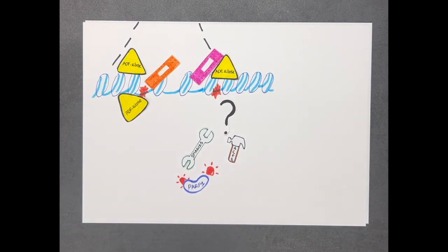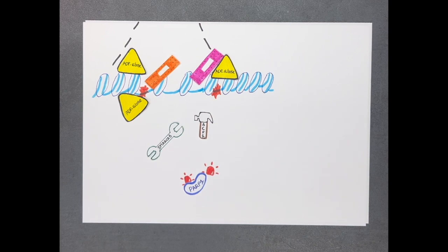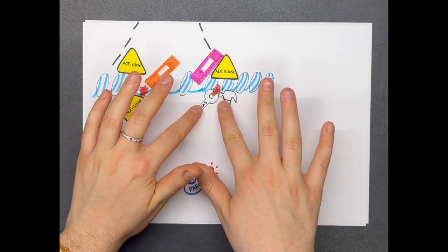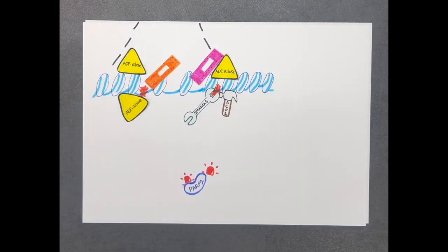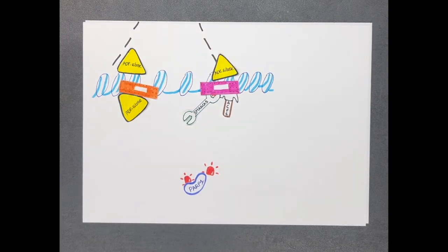they do not bind to the ADP ribose marks. Instead, we found that it is this local decondensation of the chromatin mediated by ADP ribose marks that promotes the accumulation of ACF1 and SMRK5 to sites of damage.